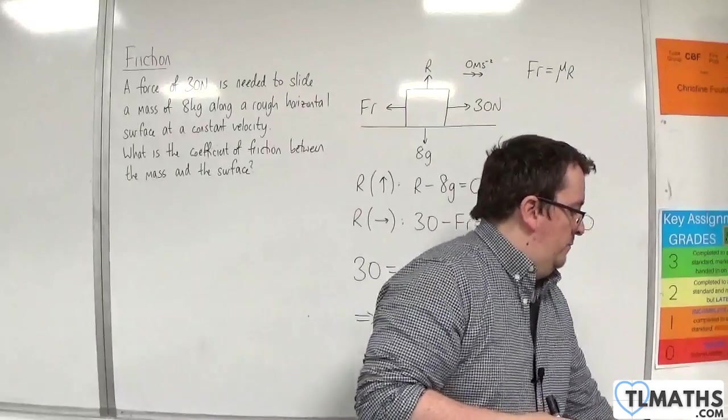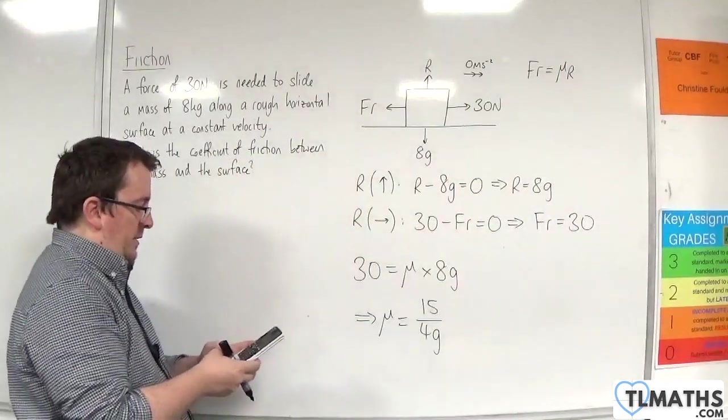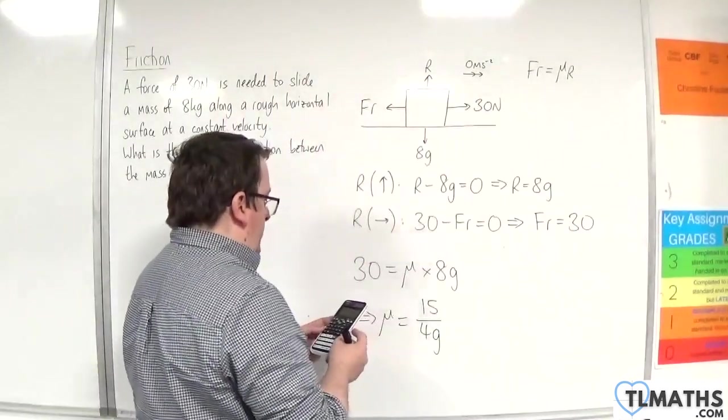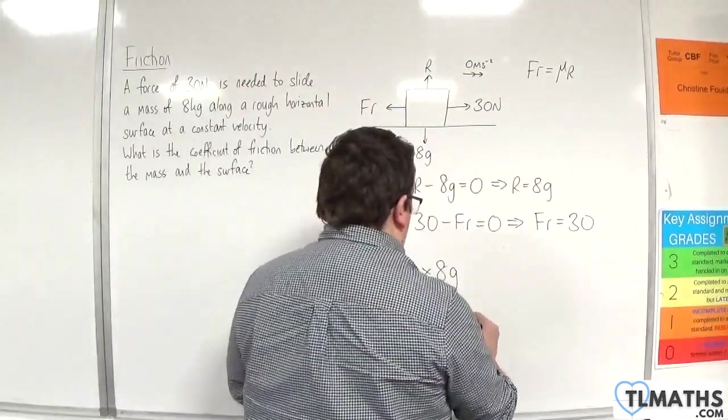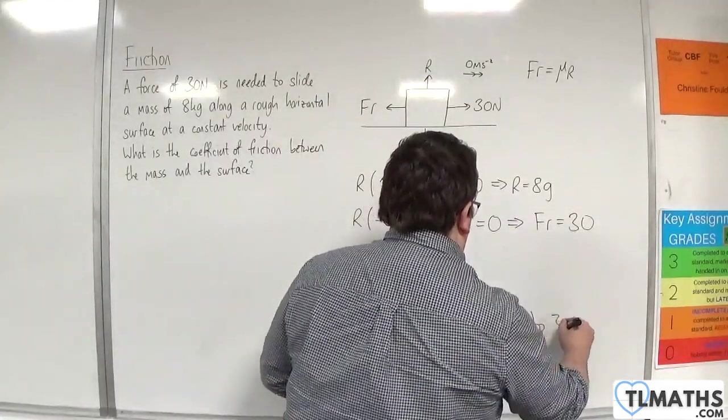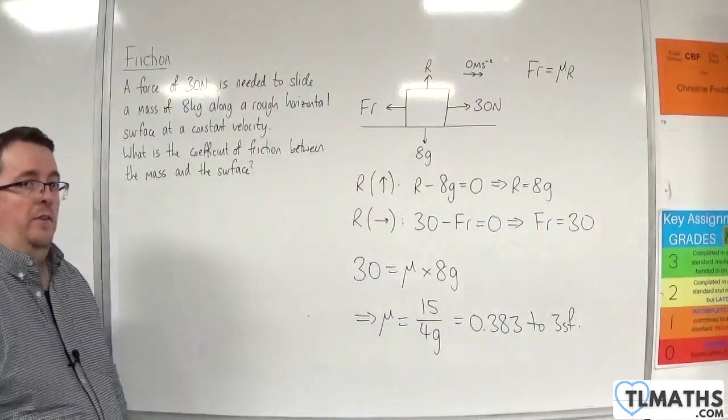Now we can put in g as 9.8. So 15 over 4 times 9.8, and that gets us 0.383 to 3 significant figures.